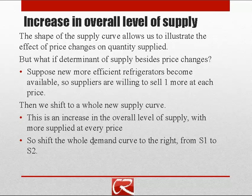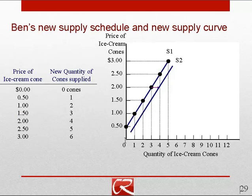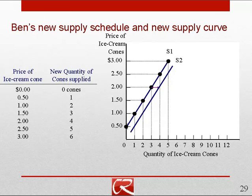There's an error in this slide. We're going to shift the whole supply curve to the right from S1 to S2. You can see here that we have a new supply curve with new data and it's one greater at every price, and you can see the supply curve shifts to the right.